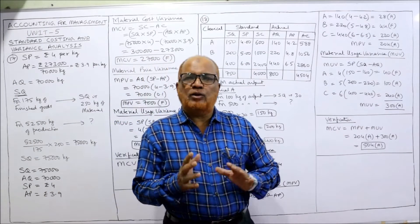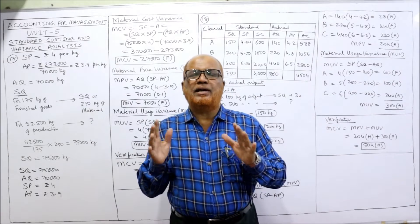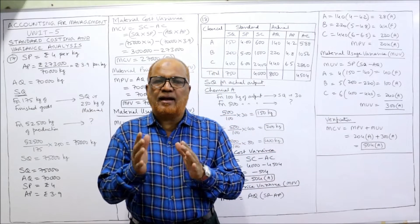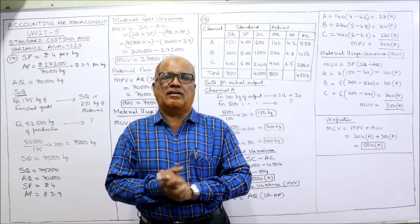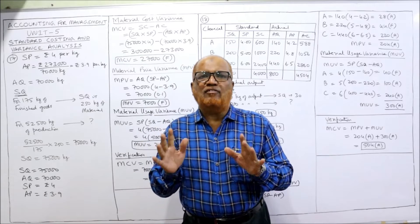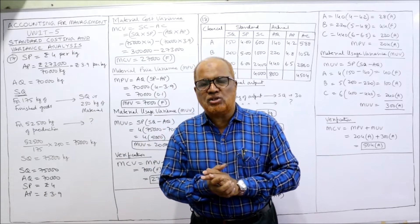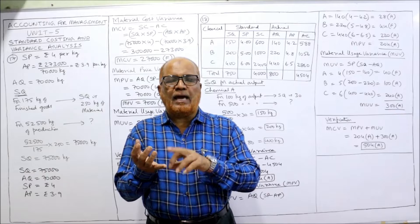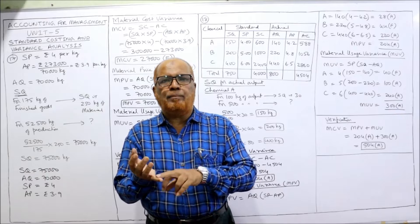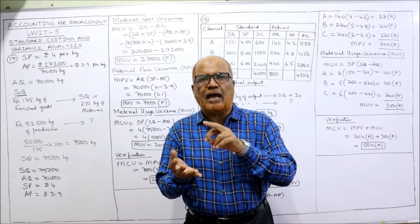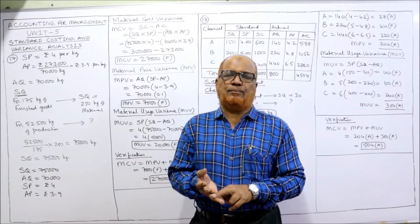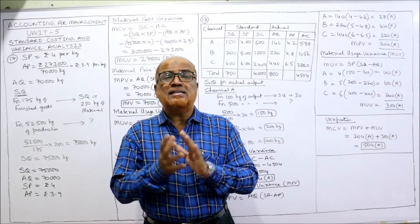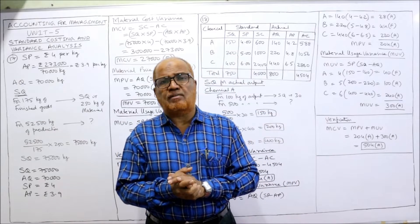In the last video I explained the complete formulae on material variances and labor variances. I covered 5 material variance formulae: MCV, MPV, MUV, MMV, and MYV. Next, labor variances — 6 labor variances I have explained.